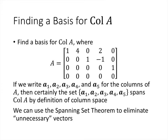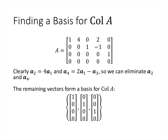If the columns are not linearly independent, we can use the spanning set theorem to eliminate the unnecessary vectors. In this case, column 2 is 4 times column 1, and column 4 is 2 times column 1 minus column 3. That means we can eliminate column 2 and column 4 from our spanning set. The remaining vectors are linearly independent, as we can easily see, and so those linearly independent vectors form a basis.